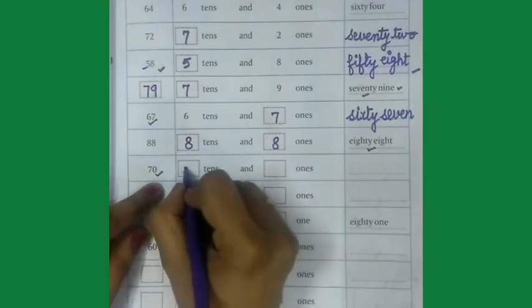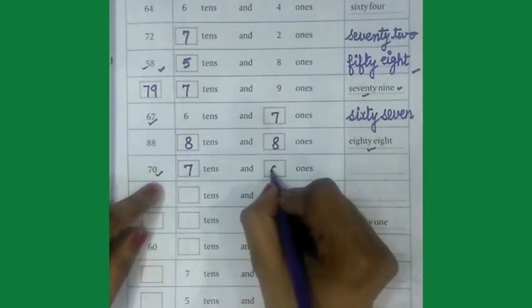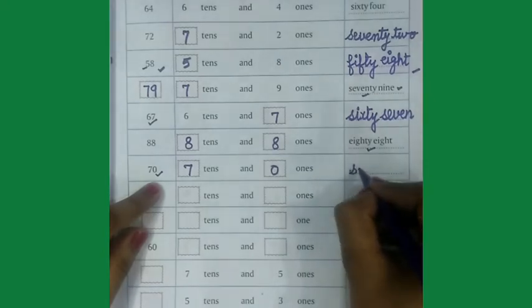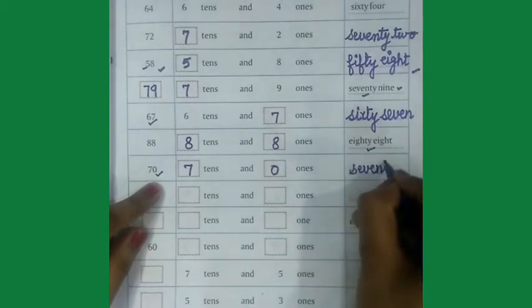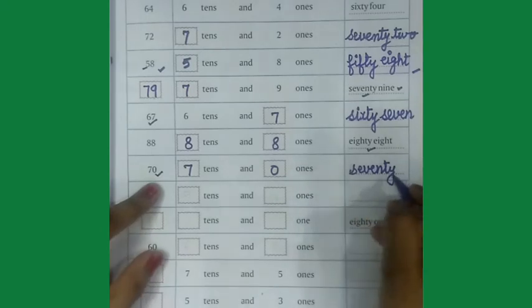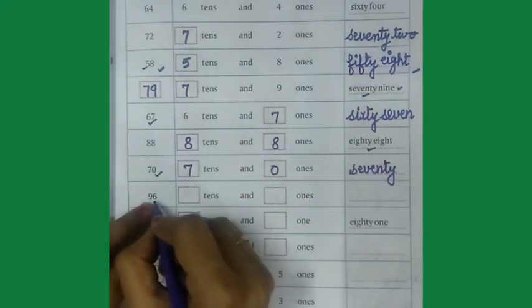Come on next one, 70, 7 tens and 0 ones, and we will write the number name also, S-E-V-E-N-T-Y-70.